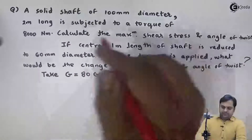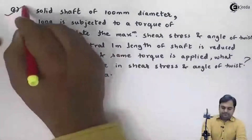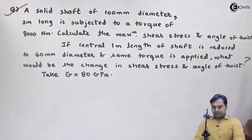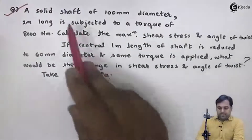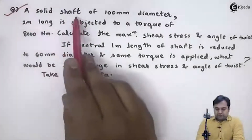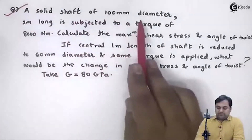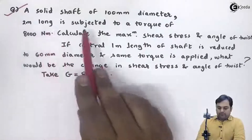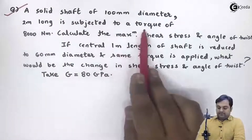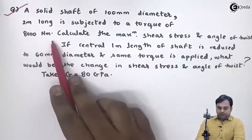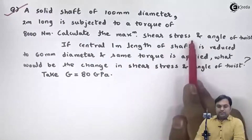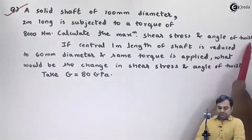Let us take the next question. A solid shaft of 100 mm diameter, 2 meter long is subjected to a torque of 8000 Newton meter. Calculate the maximum shear stress and angle of twist.